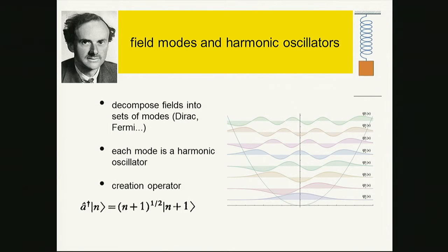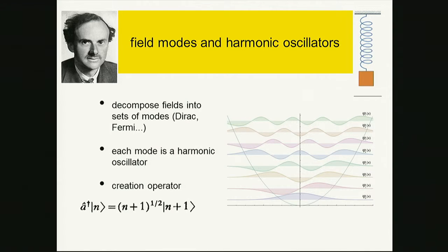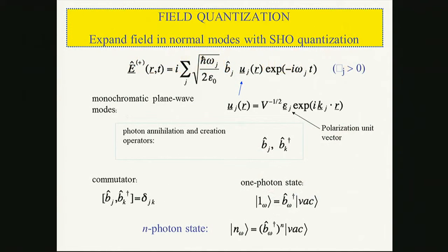What Dirac shows is you decompose the field into modes; each mode is a harmonic oscillator. There's the ground state, the first excited, the second — in other words, no quanta, one quanta, two quanta. You climb up and down this ladder with a creation operator and an annihilation operator. All I need to do with field quantization is take a Maxwellian field, write down the harmonic dependence — the unit polarization, and if it's a plane wave, the exponential ik·r — and remember that these things don't commute.